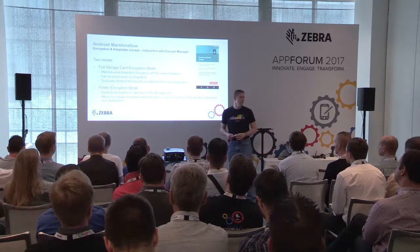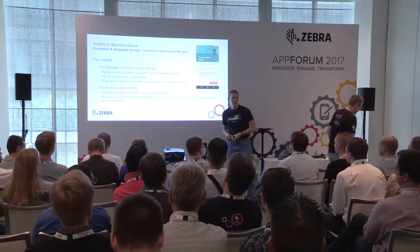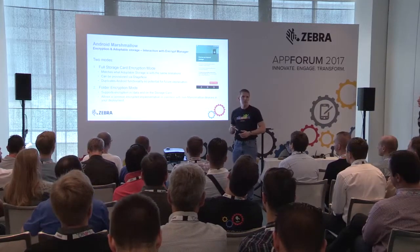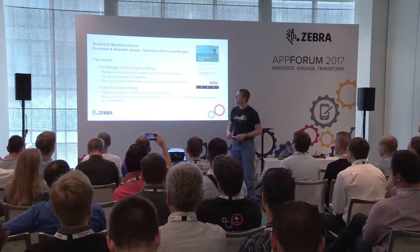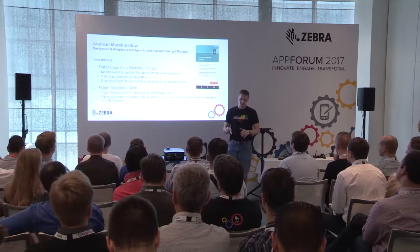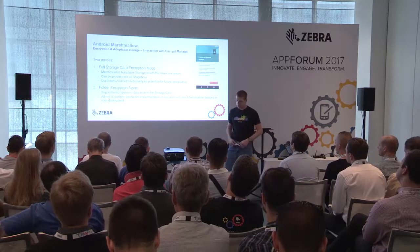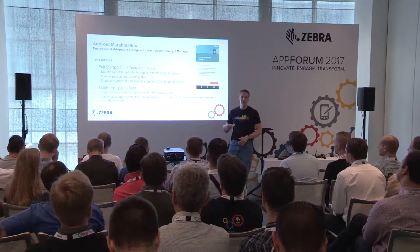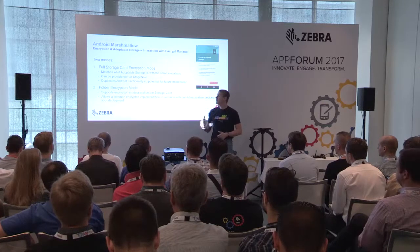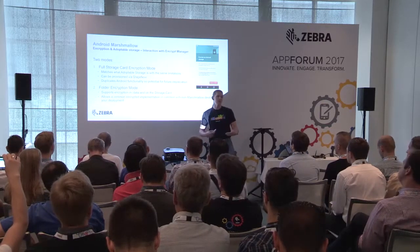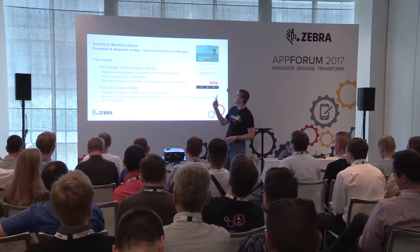Staying on Android Marshmallow, one of the lesser-known features is encryption and adoptable storage. In Android Marshmallow, Google mandated for the first time that all devices out of the box had to support encryption. Previously in Lollipop you could opt into full disk encryption in settings. In Marshmallow, to release a device with Google Play Services it must have the internal storage encrypted out of the box. This applies to GMS devices, but Zebra is consistent across all products — both AOSP and GMS will be fully disk encrypted.